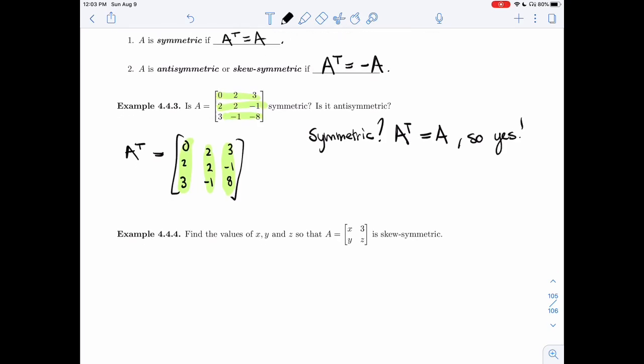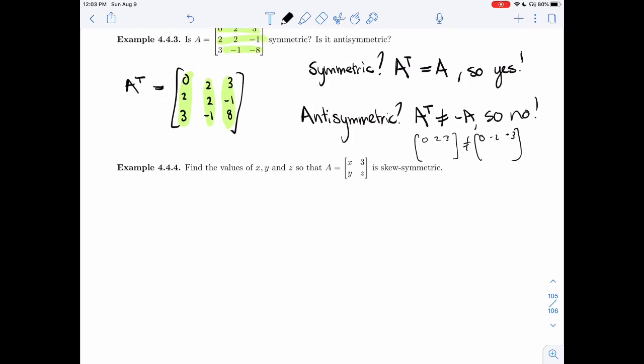Now if I want to know if it's antisymmetric, I'll be comparing A transpose to minus A. Well, that's not going to be the same. I'll have a 2 instead of a minus 2. Since this one is 0, 2, 3, and this one is 0, minus 2, minus 3, let's not even compare everything else. Just that fact is enough. As soon as one entry is different, they're different.